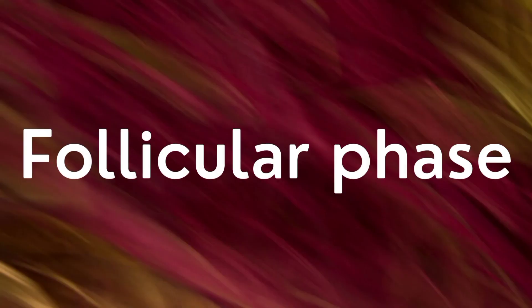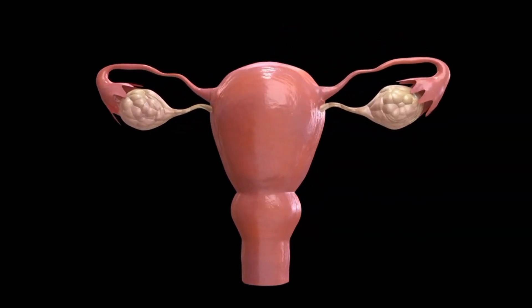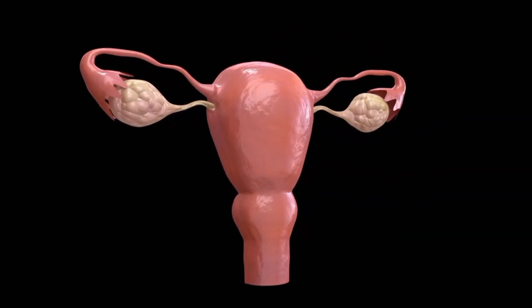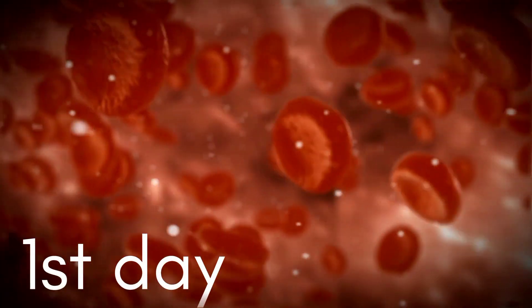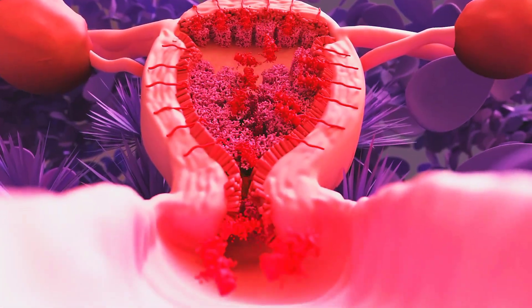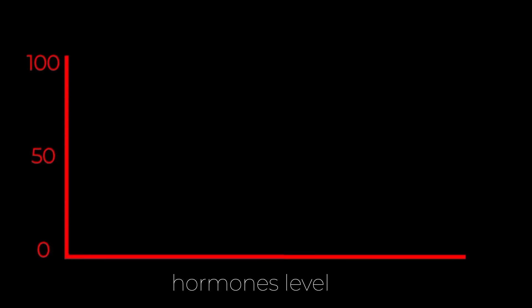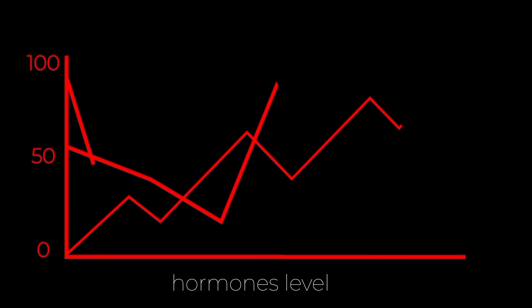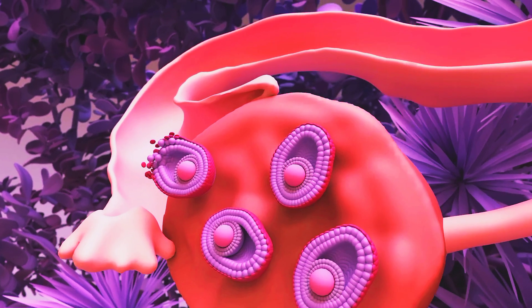The menstrual cycle begins with the follicular phase. This phase starts on the first day of menstruation, when the uterus sheds its inner lining from the previous cycle. Simultaneously, hormone levels — particularly follicle-stimulating hormone (FSH) — increase, signaling the ovaries to prepare an egg for release.